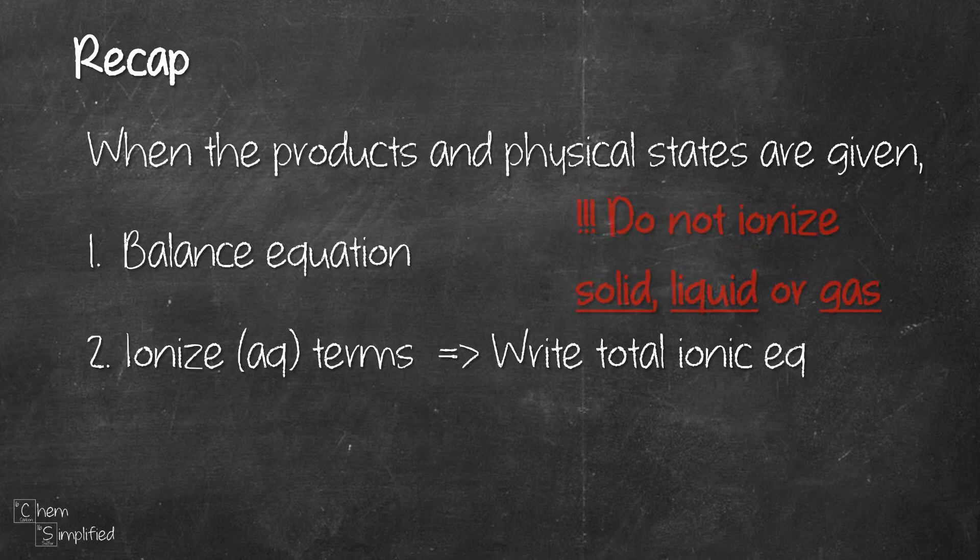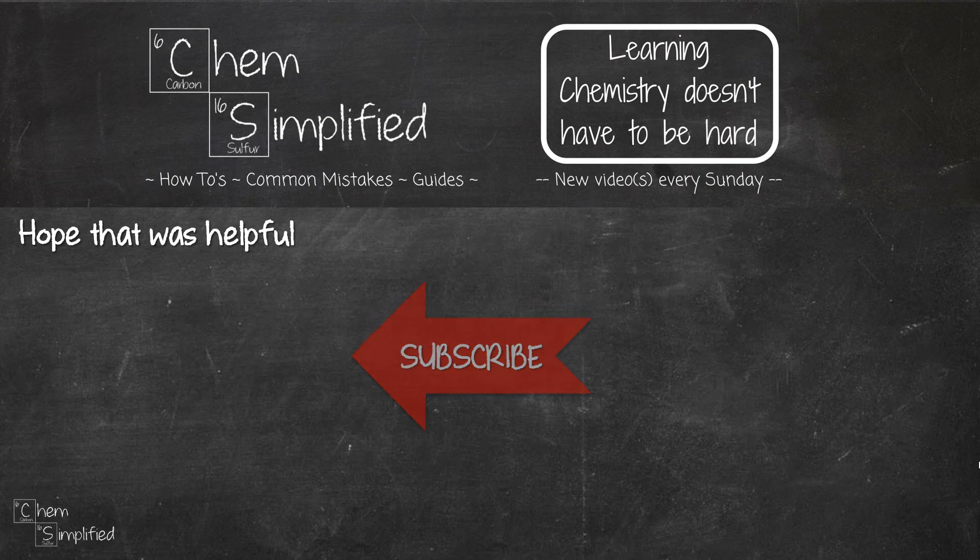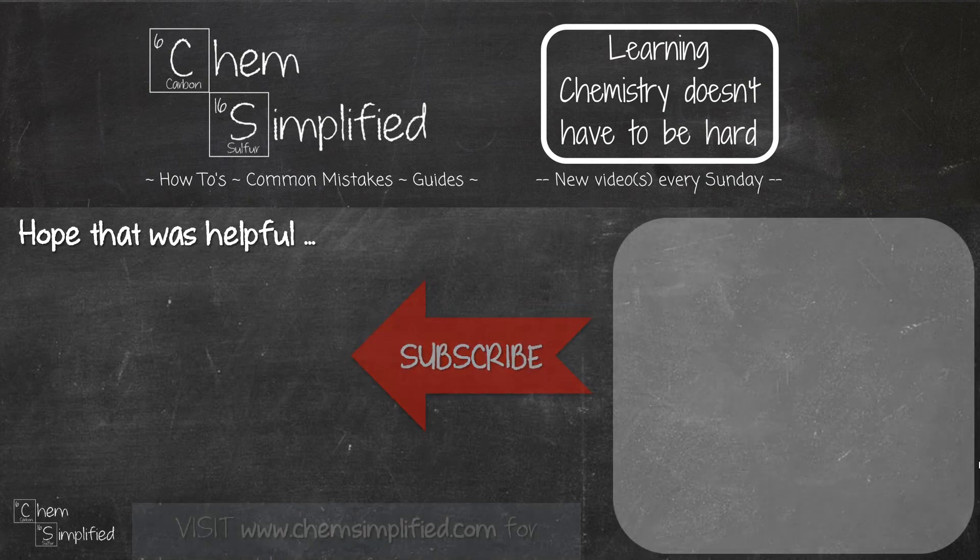Then to get the net ionic equation, what we have to do is cancel out the spectator ions. And then we rewrite the equation. If you are looking for a more challenging problem on writing net ionic equation, do keep an eye out for the other four videos in this series. I hope the video was helpful. Do subscribe and thanks for watching.